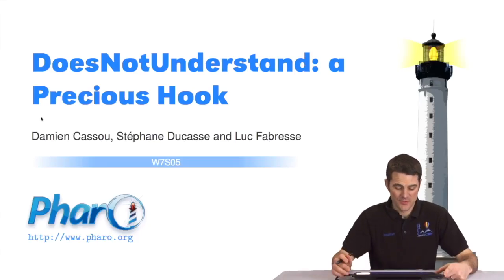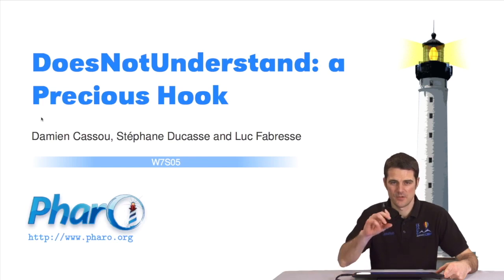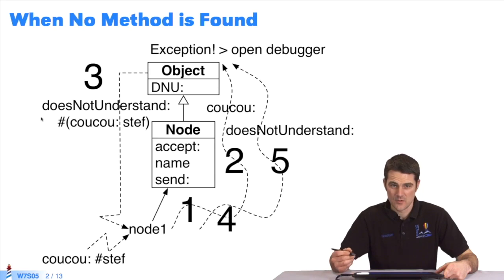Hello. This video will explain an important feature of Pharo: the doesNotUnderstand hook. You've no doubt already seen a debugger window with this message. Where does it come from, and what is it for?